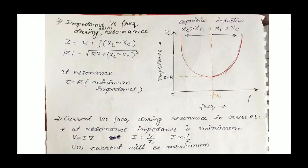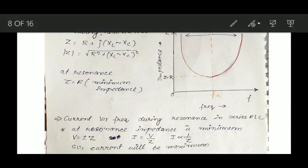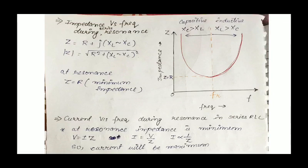Now we plot impedance versus frequency during series resonance. Impedance for a series RLC circuit is given as Z equals R plus j|XL minus XC|. At resonance, Z equals R only, because XL and XC cancel each other. If we plot the impedance versus frequency graph, we get a parabola-like curve, and at the resonant frequency the impedance is minimum, that is Z equals R.